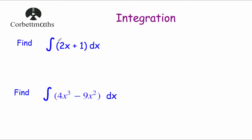Our first question using this notation: find the integral of 2x plus 1 with respect to x. We integrate each term: starting with 2x — increase the power to x squared, 2 divided by 2 is 1, so just x squared. Then plus 1 — integrating 1 gives plus x. And remember to put plus c. So the answer is x squared plus x plus c.